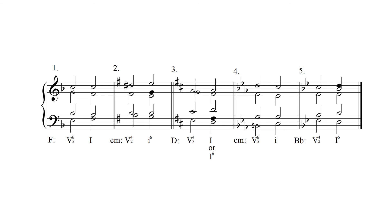Finally, resolve the remaining pitch — the chordal fifth of the dominant seventh chord — either up or down by step. There are two solutions: the C can move down to B flat, or up to D to double the chordal third. Again, the first inversion tonic triad allows for more flexibility regarding doubling.